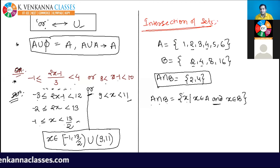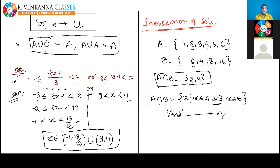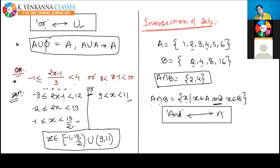Sorry for the disturbance. So: intersection means all those elements x which belong to both sets. A ∩ B = {x : x ∈ A and x ∈ B}. The meaning of 'and' here is intersection. Remember this: if in any question you see 'and', it means intersection; and intersection means 'and'.